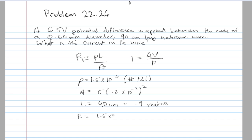1.5 times 10 to the negative 6 times 0.9, divided by the area which is pi times 0.3 times 10 to the negative 3 squared. This gives us the resistance of the wire.